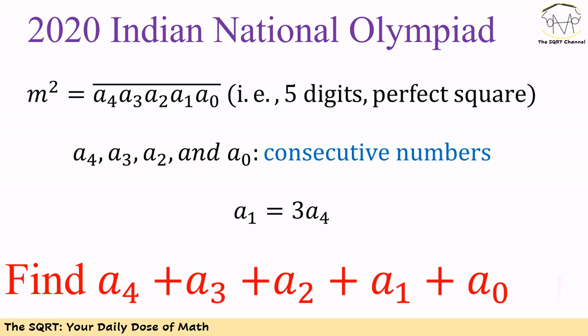Hello everyone. In this video we are going to talk about another problem from the 2020 Indian National Olympiad. In this problem we are given a number that has five digits and it is a perfect square number.